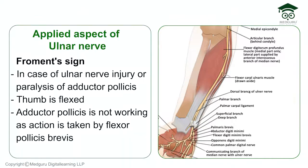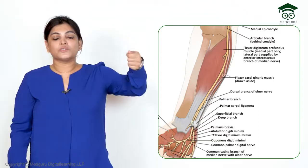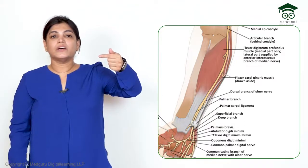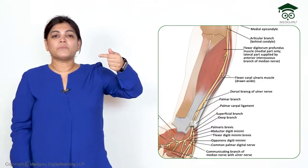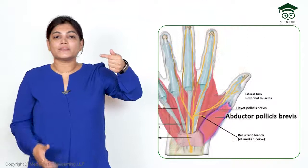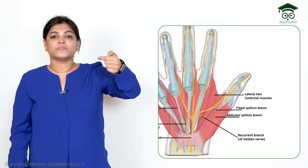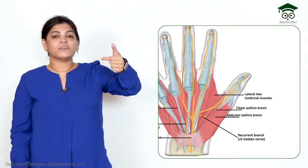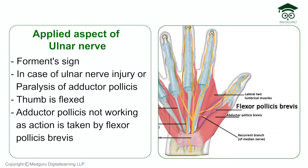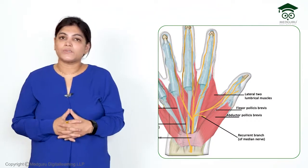There is a clinical test called Froment's sign. If a patient with ulnar nerve injury is asked to hold a piece of paper between the thumb and index finger, a normal person keeps the thumb straight. But in ulnar nerve injury — due to paralysis of adductor pollicis — the patient flexes the thumb (using flexor pollicis brevis to compensate) when the paper is pulled. This positive Froment's sign indicates ulnar nerve palsy.